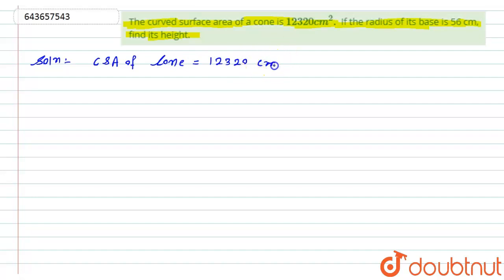Similarly, the radius of the base of the cone is given to us, that is r equals 56 centimeter. So here we have to calculate the height of the cone, that is h equals question mark.